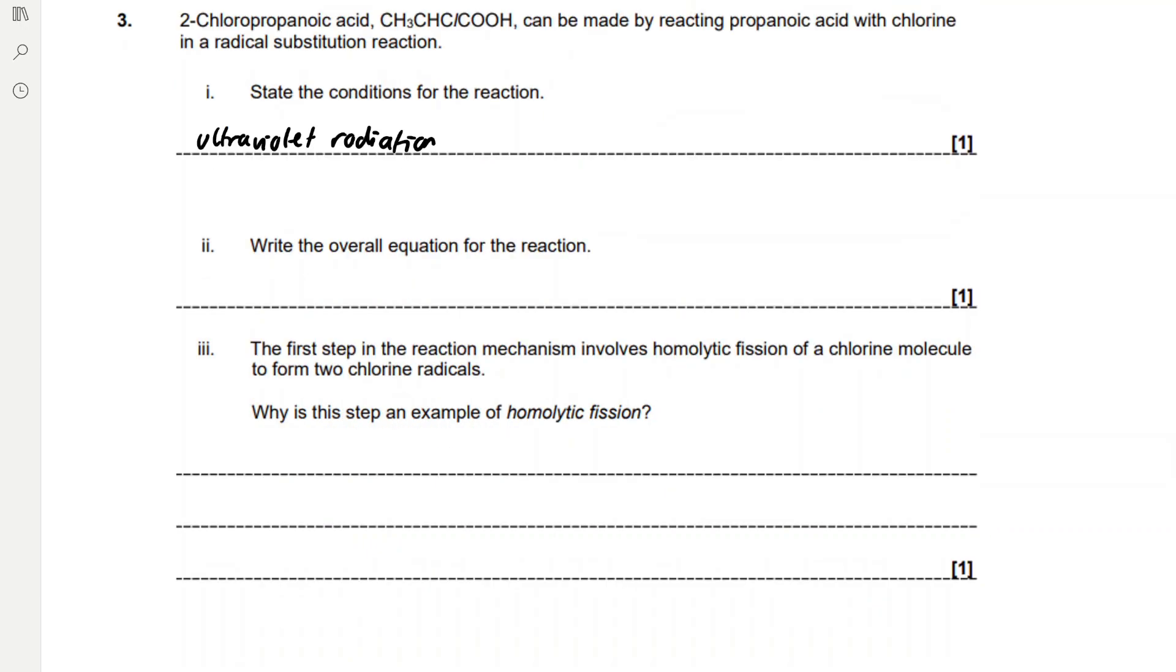Write the overall equation for the reaction. We're reacting propanoic acid with chlorine to form 2-chloropropanoic acid and HCl as a side product.